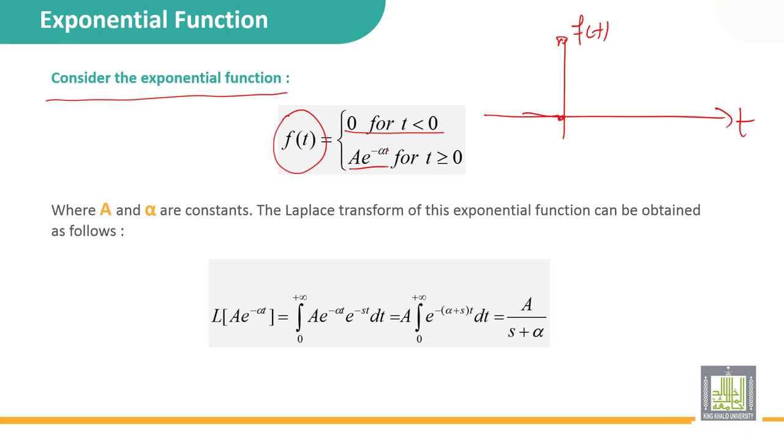If I replace t by zero, I get A here. And when the time increases, the function f(t) decreases. The function f(t) is like this: here A, and alpha should be constant.